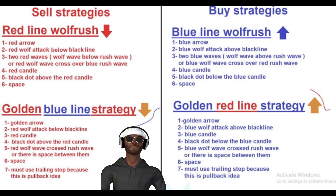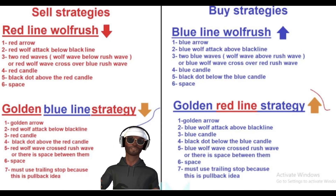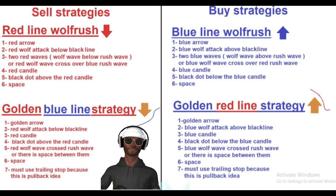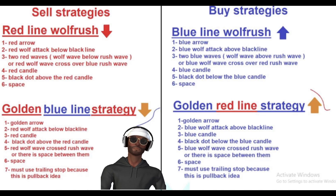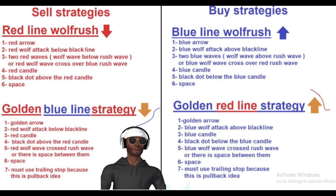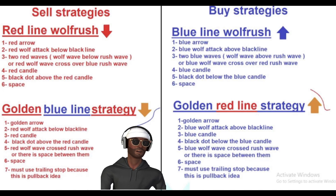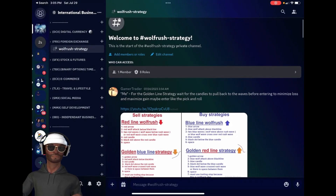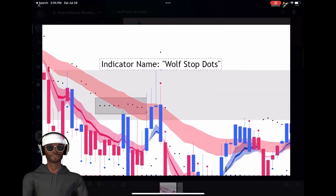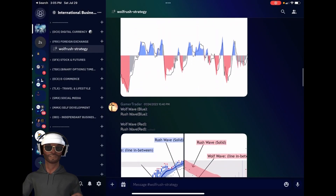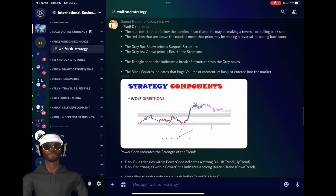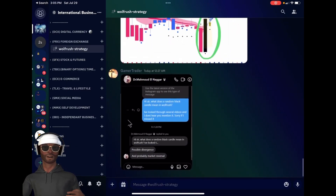Hey, what's going on traders, it's Too Tall here and I'm actually excited to tell you about a strategy I'm using called Wolf Rush within IA Master Academy, and a sub-strategy called the Golden Blue Line strategy. If you want to know the components, they're in the bottom left corner — pause the video. And if you want to understand what everything means within the academy, join me with my link in the description to my Discord channel.